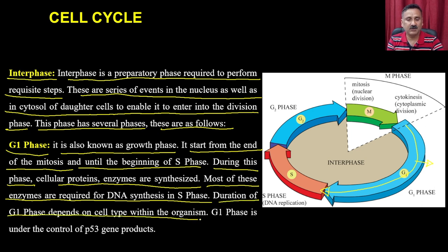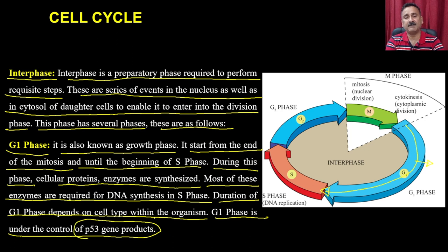The duration of the G1 phase depends on the cell type. G1 phase is under the control of the P53 gene product, a transcription factor that regulates the cell cycle. Its length depends on the availability of raw materials and the genetics of the cell. Slow-growing cells may have a very long G1 phase, whereas fast-growing cells have a short G1 and G2 phase.